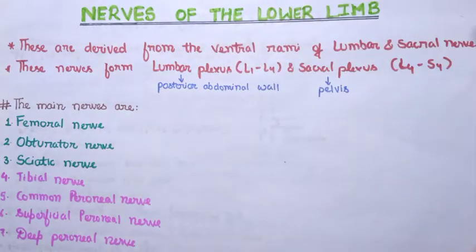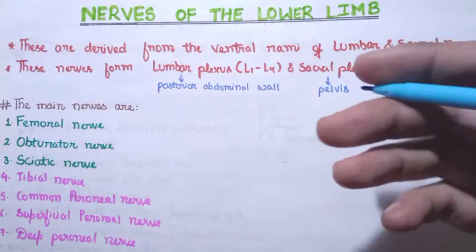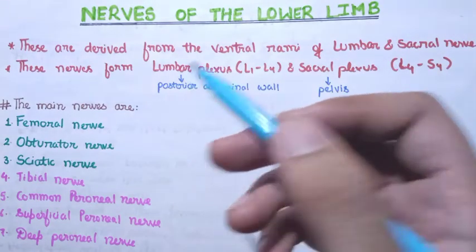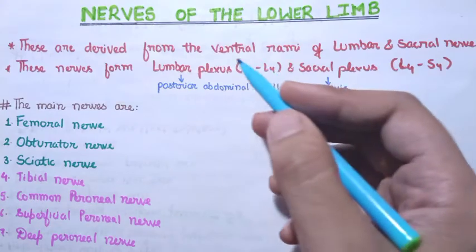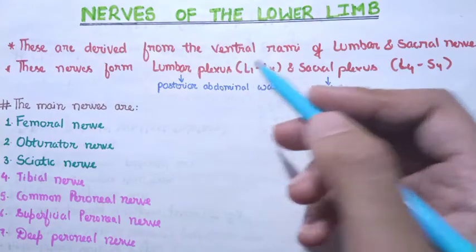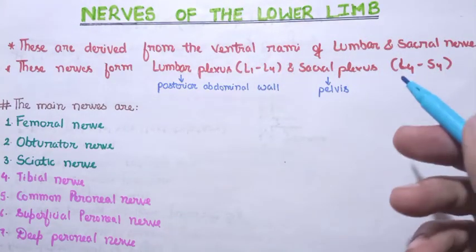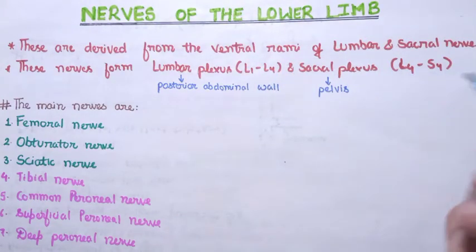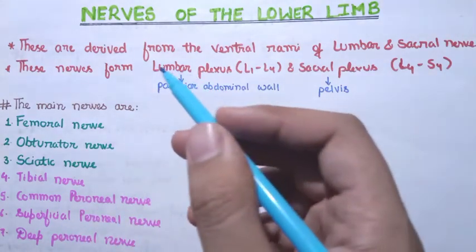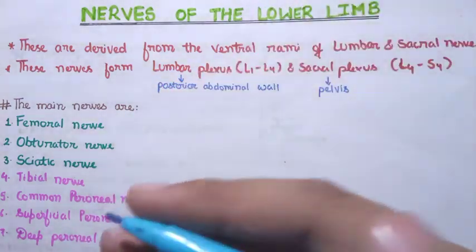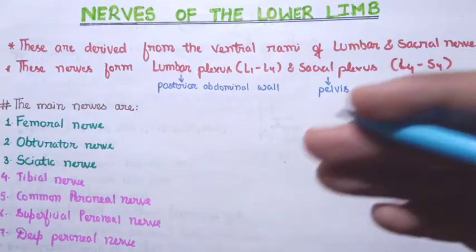These nerves arise from the lumbar and sacral parts of the spinal cord. They form the lumbar plexus and the sacral plexus respectively. The lumbar plexus is formed by spinal nerves L1 to L4, and the sacral plexus is formed by spinal nerves L4 to S4. The lumbar plexus is situated in the posterior abdominal wall.